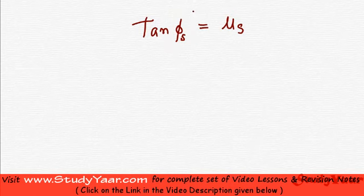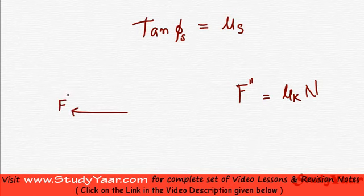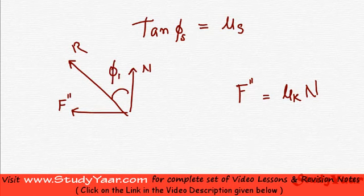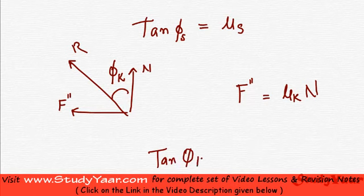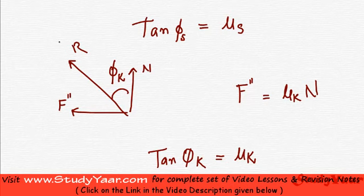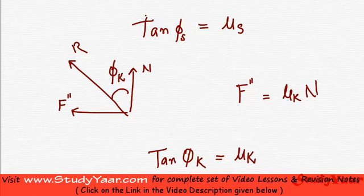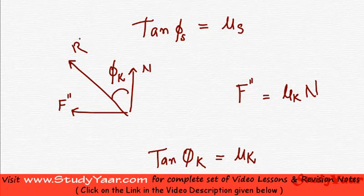Similarly, when my body is in motion, I know that F'' is equal to μk into N. Therefore, the reaction angle φk satisfies tan φk = μk. So when the body is moving, you know what angle the reaction makes with the vertical. And when the body is just about to move, you know what angle the reaction makes with the vertical. At these two times, you know what is the direction of your reaction.